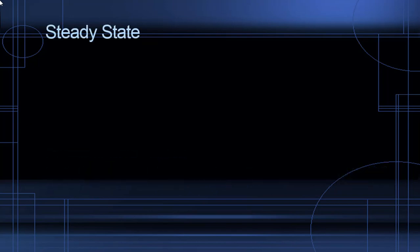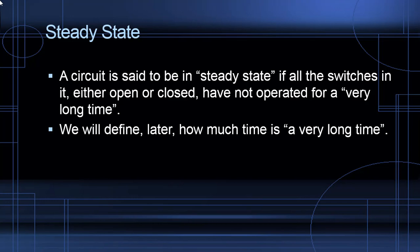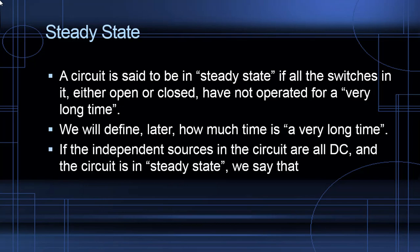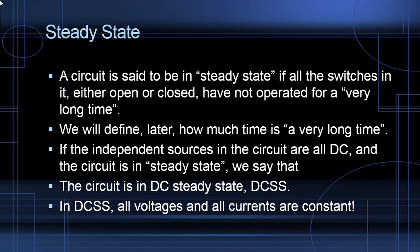We begin this video with a definition: steady state — one we will use often. A circuit is said to be in steady state if all the switches in it, either open or closed, have not been moved for a very long time. We will define later how long 'a very long time' is. If the independent sources are all DC and the circuit is in steady state, we say it is in DC steady state — DCSS. A consequence is that in DC steady state, all voltages and all currents are constant.